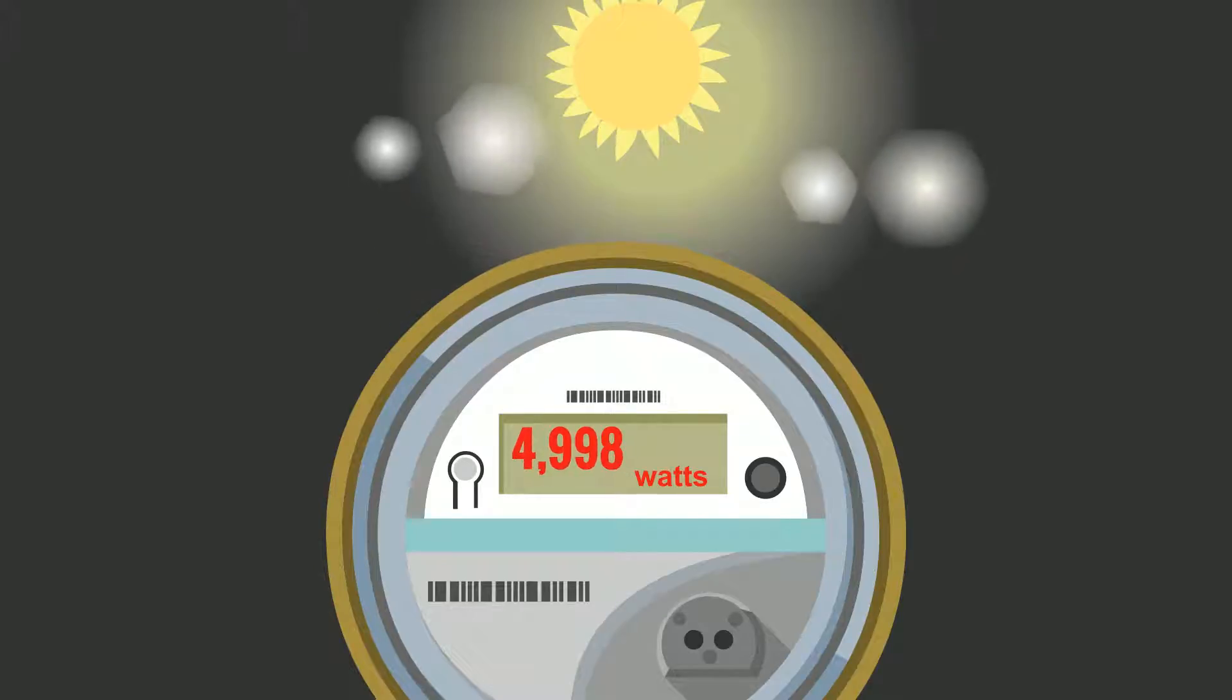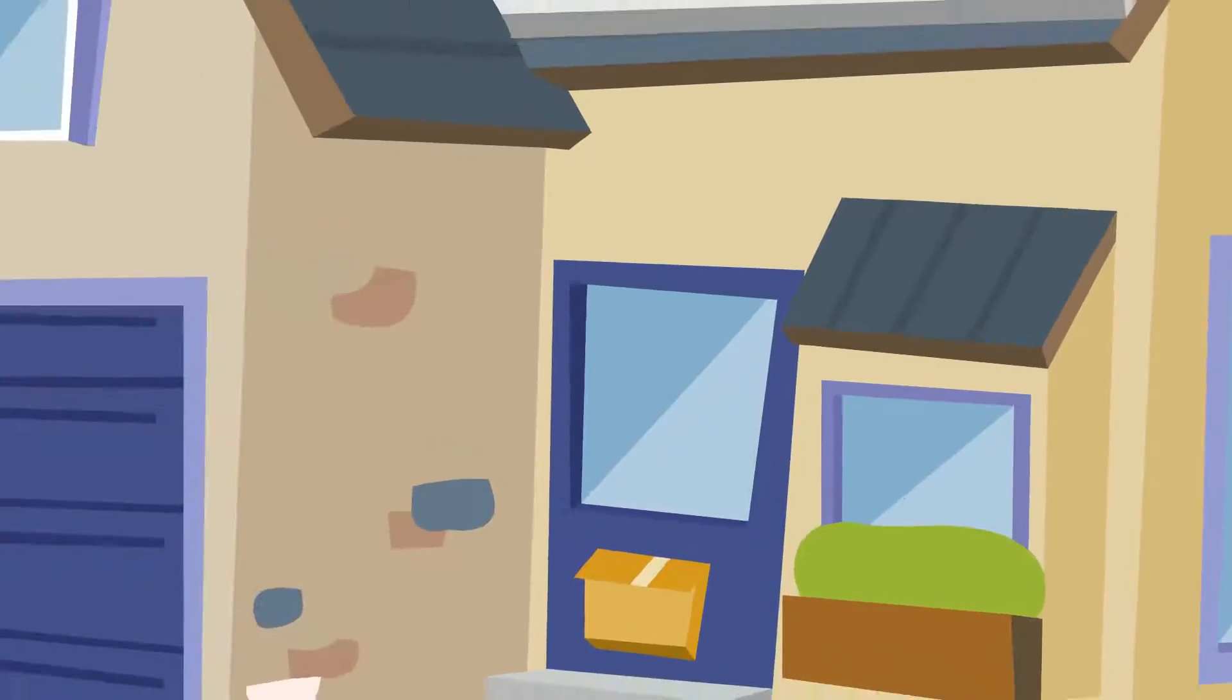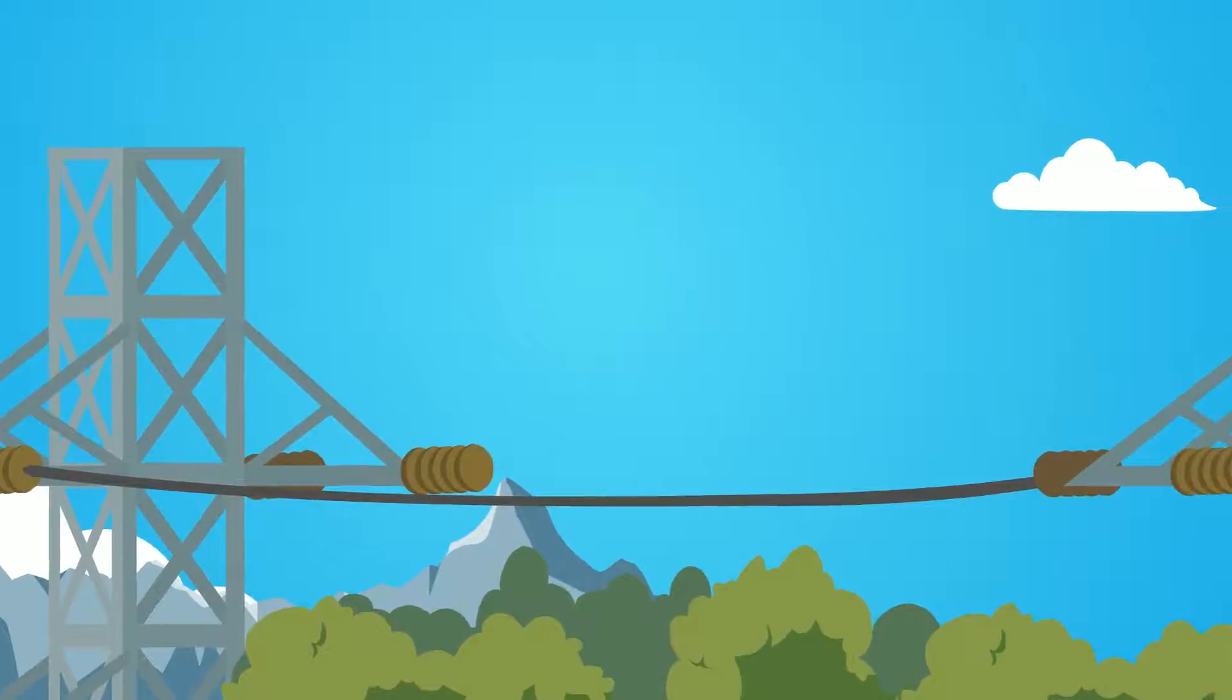If the solar system is making more power than is being used in the property, the surplus is fed into the mains power grid.